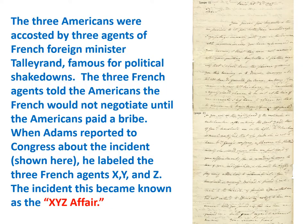When the three Americans arrived in France, they were accosted by three agents of French Foreign Minister Talleyrand, who was famous for political shakedowns. The three French agents told the Americans the French would not negotiate until the Americans paid a bribe. When Adams reported to Congress about the incident, he labeled the three French agents X, Y, and Z. This incident became known in history as the XYZ Affair.